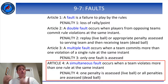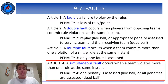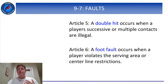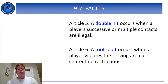For example, if a substitution is delayed by Team A at the same time that the referee hears a player on Team A complain loudly, then the referee should penalize both of those faults. Articles 5 and 6 give specific names to faults that are described but not named explicitly elsewhere in the rules — here we learn about a double hit and a foot fault.